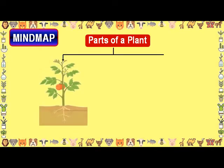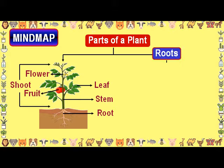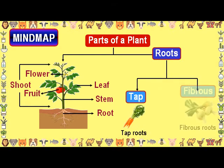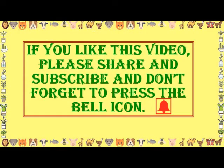Mind map — Parts of a Plant: Shoot, Root, Stem, Leaf, Flower, Fruit. Roots: Tap and Fibrous. If you like this video, please share and subscribe, and don't forget to press the bell icon.